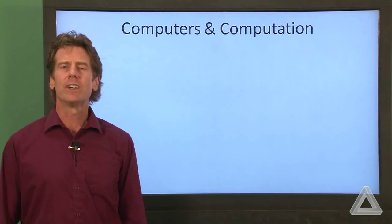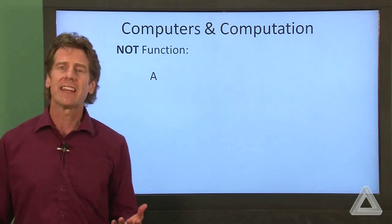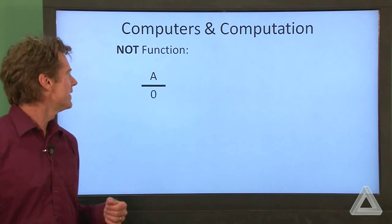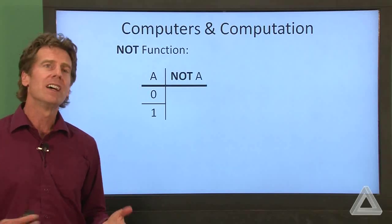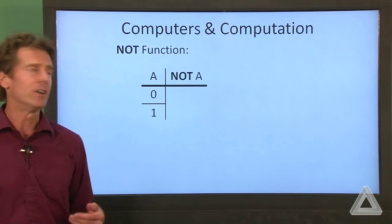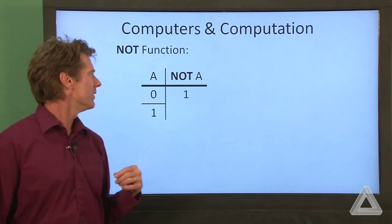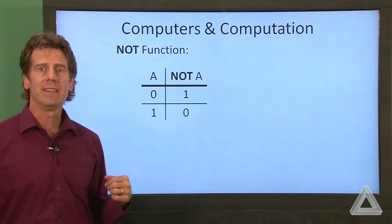Finally, the third function we'll discuss is the NOT function. And this just has a single input. We'll call it the bit A, and that could be zero or one. We feed that into the NOT function, and this just changes true to false or false to true. So if we have zero as the input, the output is one. If we have one as the input, the output is zero.